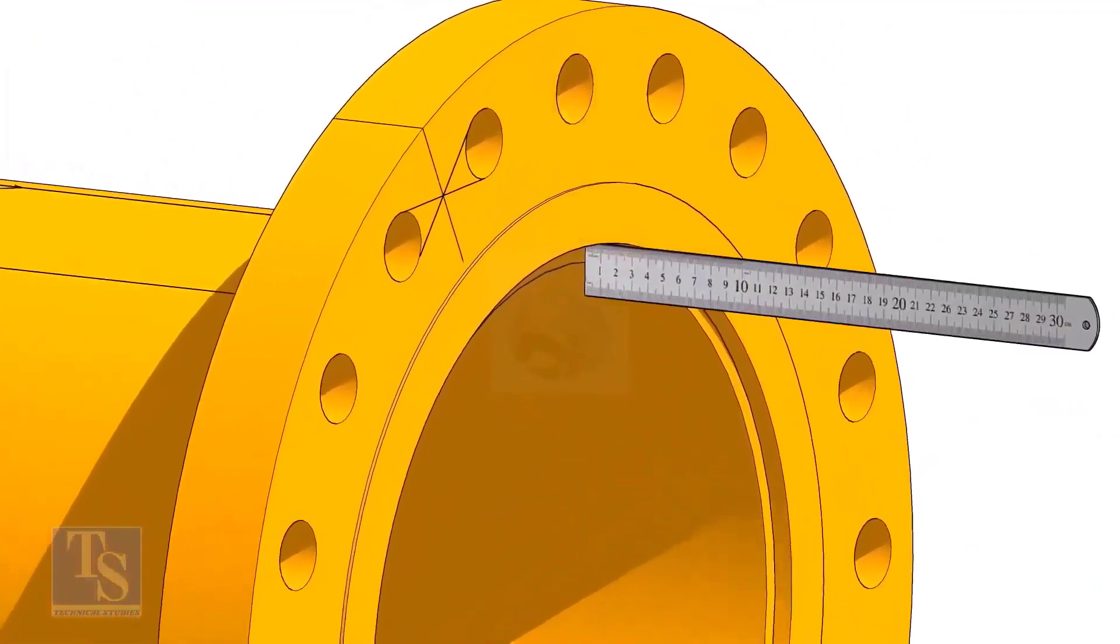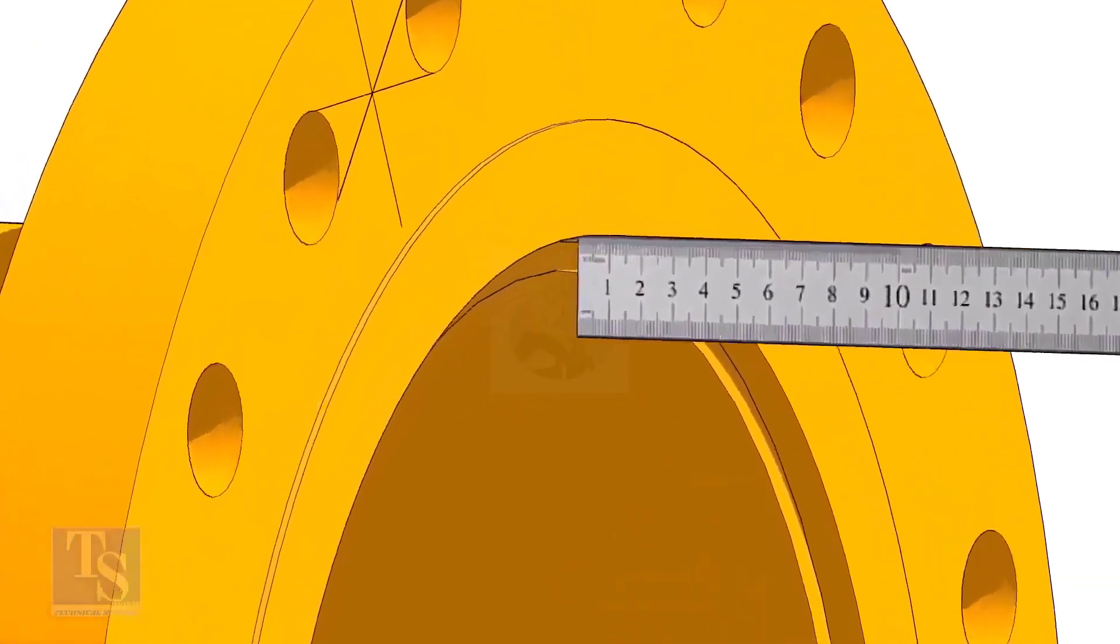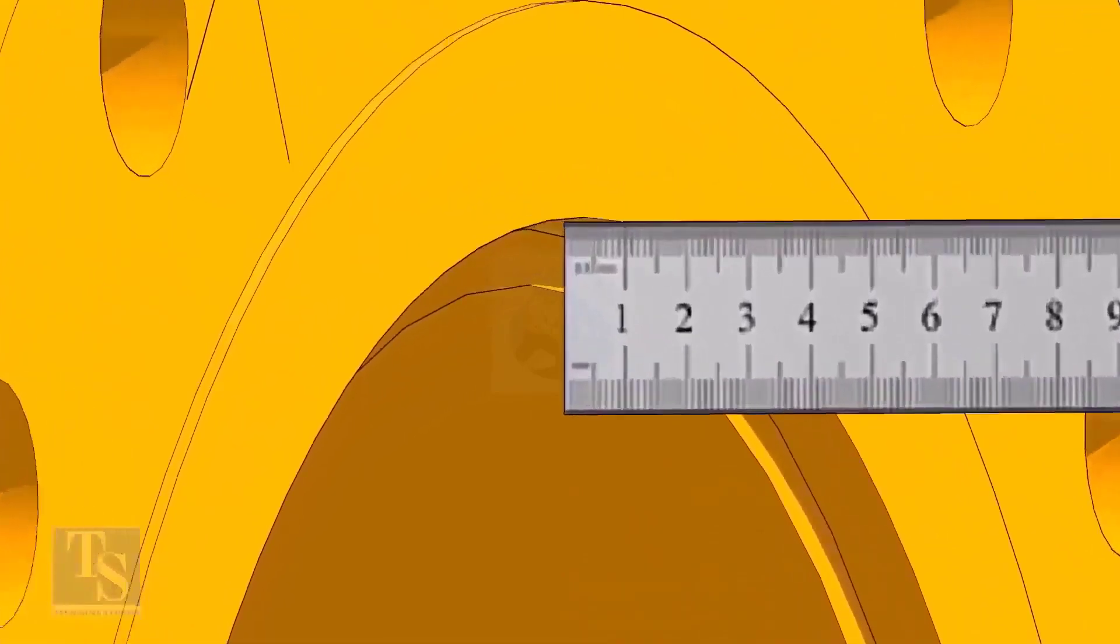Fix the distance between the flange face and the pipe face. Usually, this measurement is equal to the thickness of the pipe.